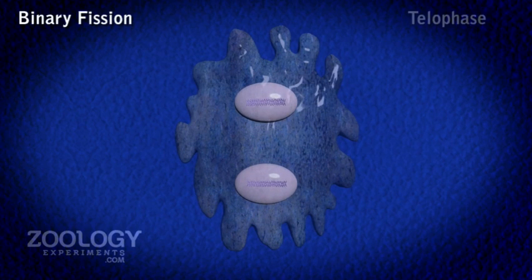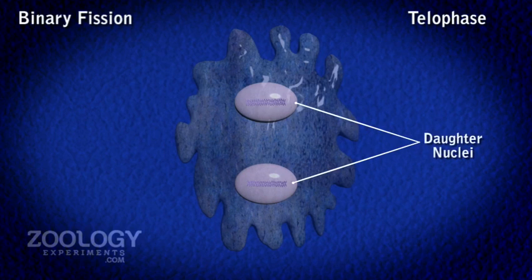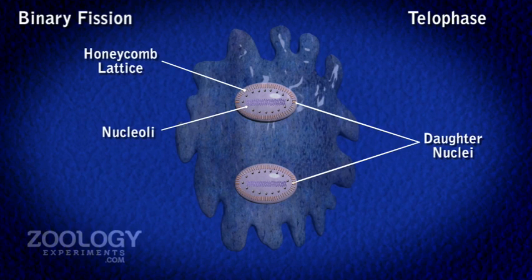During telophase, the constriction of the nuclear membrane is completed and the nucleus is finally divided into two daughter nuclei. In each daughter nucleus, the lattice is formed beneath the nuclear membrane and the nucleoli reappear.